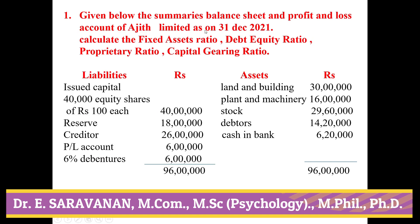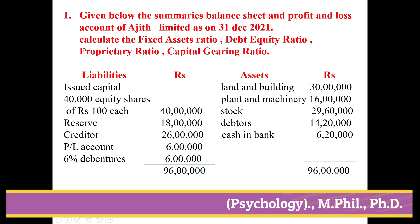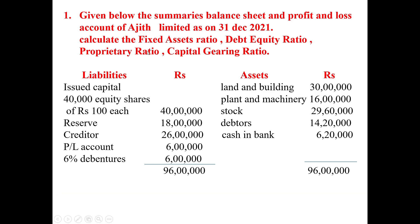Question number one: Given the balance sheet and P&L account of Ajit Limited as on 31 December 2021. Find out Fixed Assets Ratio, Debt Equity Ratio, Proprietor Ratio, and Capital Gearing Ratio. The data: Issued capital 40,000 equity shares — 40 lakhs. Reserve — 18 lakhs. Credit card — 26 lakhs. P&L account — 6 lakhs. 6% Debenture — 6 lakhs. Assets: Land and Building — 30 lakhs. Plant and Machinery — 16 lakhs. Stock — 29 lakhs 60,000. Debtors — 14 lakhs 20,000. Cash in Bank — 6 lakhs 20,000. Total — 96 lakhs.